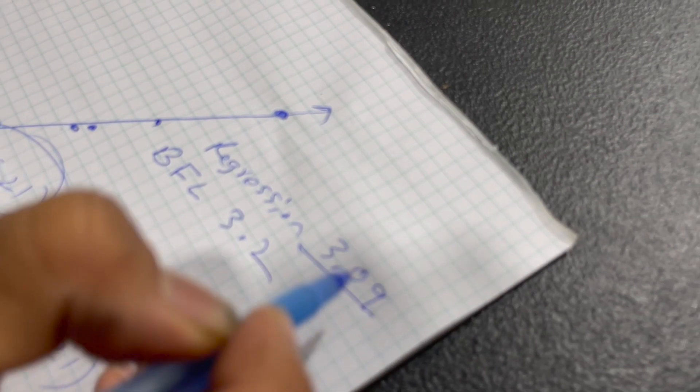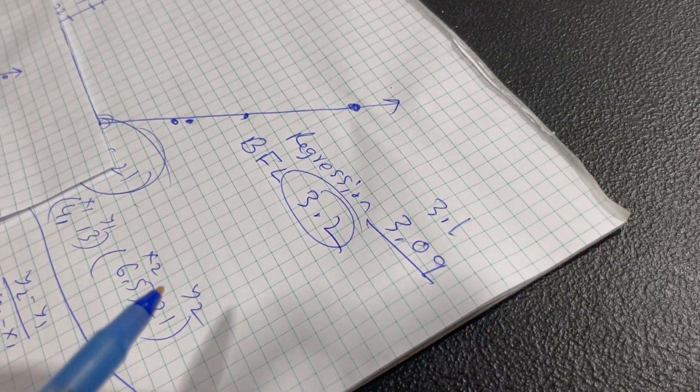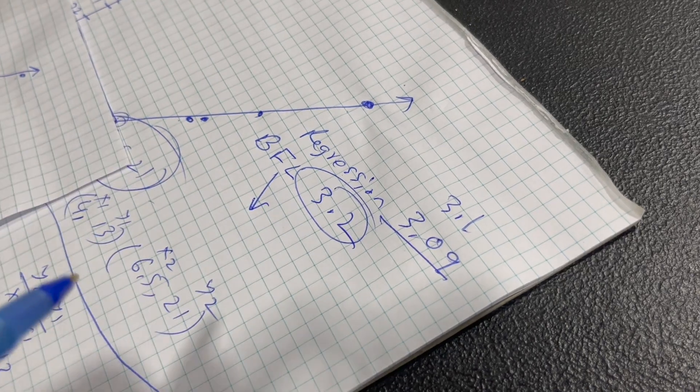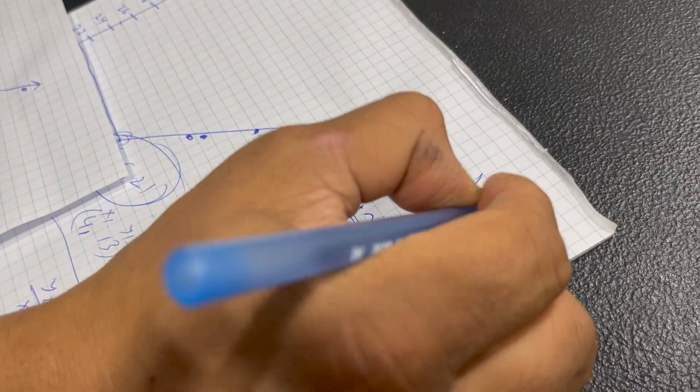Okay. So regression is about 3.1. And base line is about 3.2. Best-fit line error is 2 percent. And regression error is 1.6 percent. Both of them are acceptable because both of them are less than 5 percent.